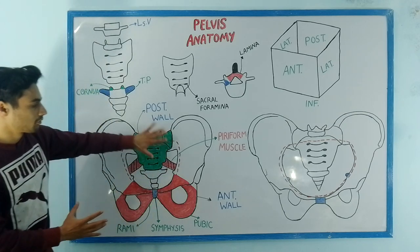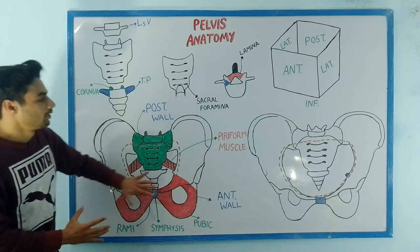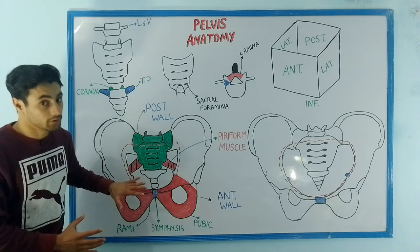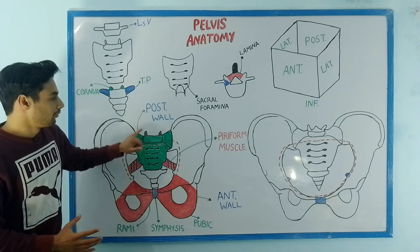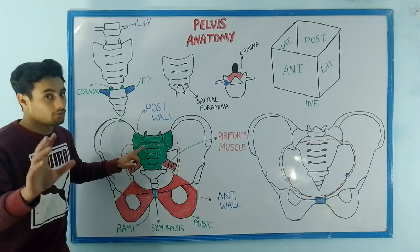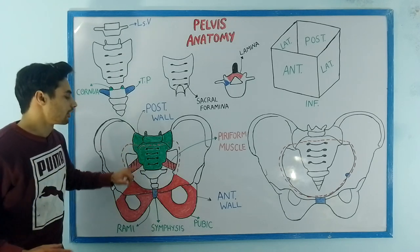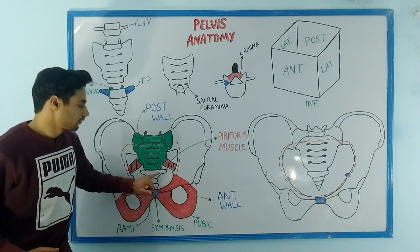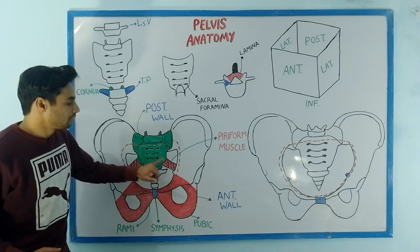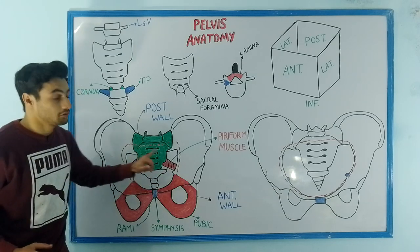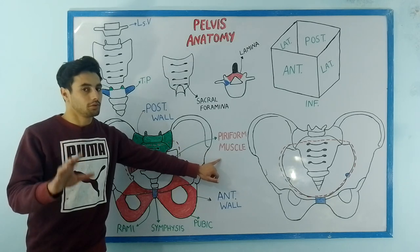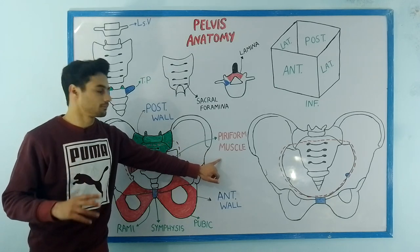Have a look at the posterior wall of this pelvic cavity, which is formed by the sacrum bone — shown here in green — the coccyx bone, along with two muscles on each side, which is the piriformis muscle.